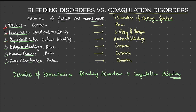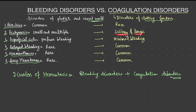Petechiae are common in bleeding disorders and rare in coagulation disorders. Petechiae are less than 2 mm of subcutaneous bleeding — small reddish to pinkish pinpoint hemorrhages seen under the skin. Similar lesions but more than 1 cm are called ecchymoses. These are small and multiple in bleeding disorders, while ecchymoses are solitary and large in coagulation disorders.